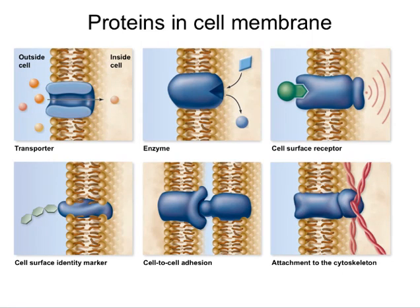There are also proteins that allow cells to adhere to one another, as well as proteins that help attach to cytoskeleton filaments to give structure to the cell. There may also be a combination of both, where proteins attach to the cytoskeleton and also attach to surrounding cells.